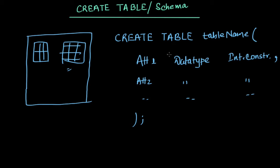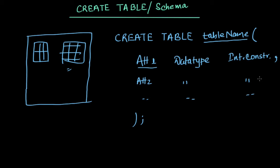To create a table, we pass the command CREATE TABLE followed by the table name. Then we specify the attribute — for example, in a table we may have attributes like name and roll number. We pass the attribute name, then the data type. If it is a name, we will pass VARCHAR or CHAR. Then we specify integrity constraints — for example, we may want name to be NOT NULL, or roll number to be UNIQUE because roll number has to be unique.